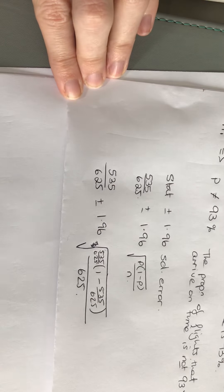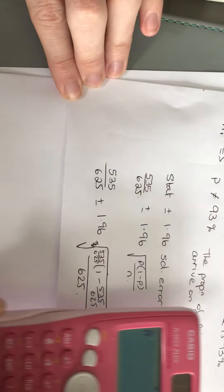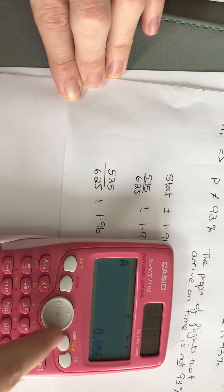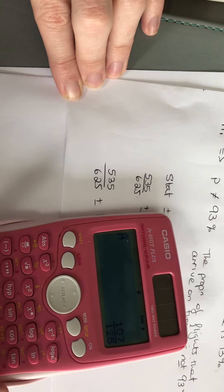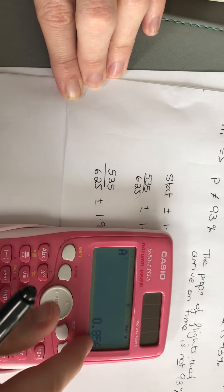Sorry, I had to cut off the video there. I'm just going to continue on here. So into my calculator, I've saved my statistic, the 535 over 625, which turns out to be 85.6%.